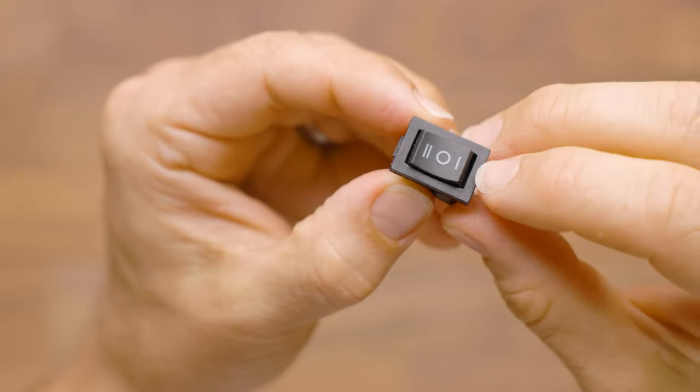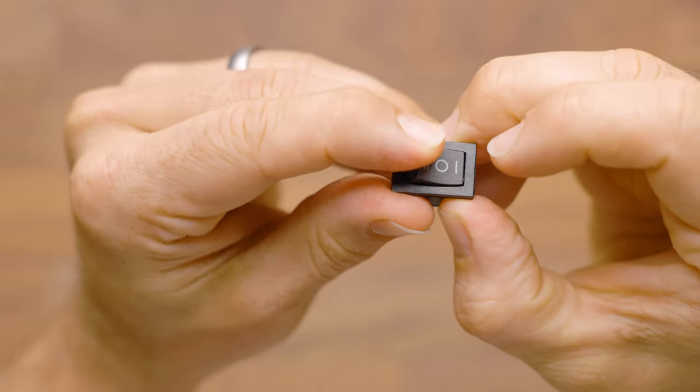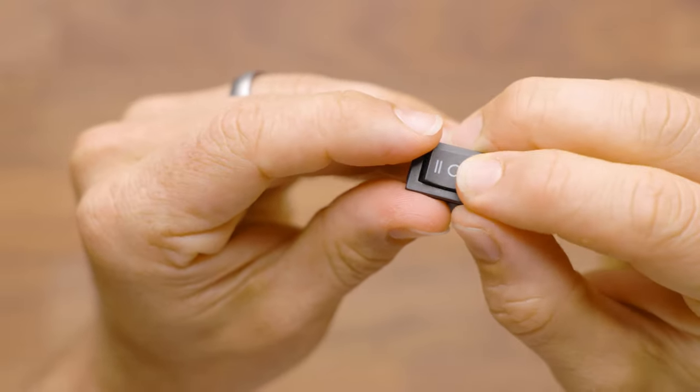Hey, it's Luke with Out of Darts. This is our three-position microswitch. Unlike the two-position where it's just on-off, this has an on and off and a center.